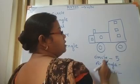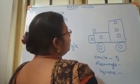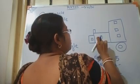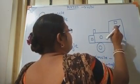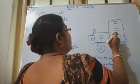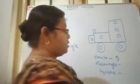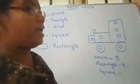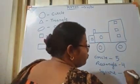After this, rectangle — see this: 1, 2. Okay, this is also a rectangle: 1, 2, 3, 4. How many rectangles are there? 4 rectangles. And how many squares? See, squares are there: 1, 2, 3, 4. So 4 squares.